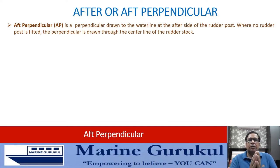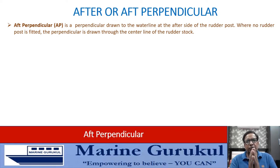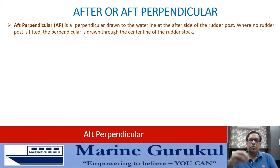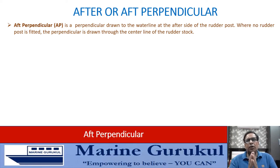The after perpendicular is also drawn perpendicular to the waterline. It is drawn through the after side or after edge of the rudder post. In ships where there is no rudder post, it is drawn through the center of the rudder stock. The rudder post is a vertical member of the stern frame where the rudder is hung. The rudder stock is a vertical member to which the rudder is attached and which connects to the steering gear.